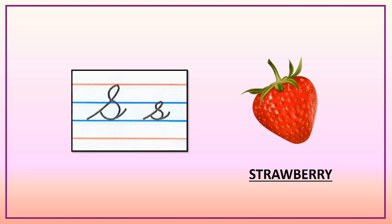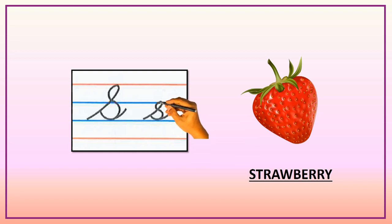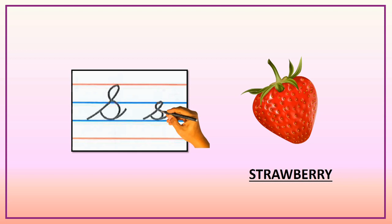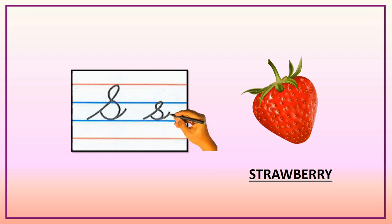Small letter S. Start from second blue line. Slant line up to first blue line. Turn left curve. Come down in a right curve to second blue line. Touch the slant line. Come back and out you go. S — Strawberry.